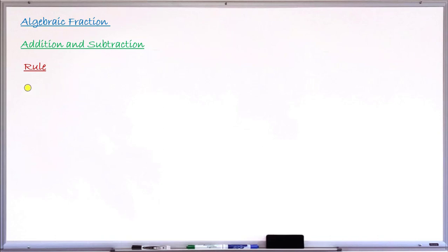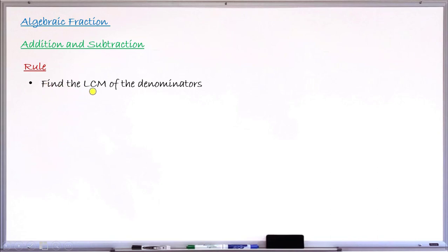It is this rule that will tell us what we need to do from step number one to the last step — all the procedures required to do addition and subtraction of algebraic fractions successfully. Rule number one says: find the LCM of the denominators of the two fractions you are either adding or subtracting — their polynomial denominators. Once you have done that, move to the next step.